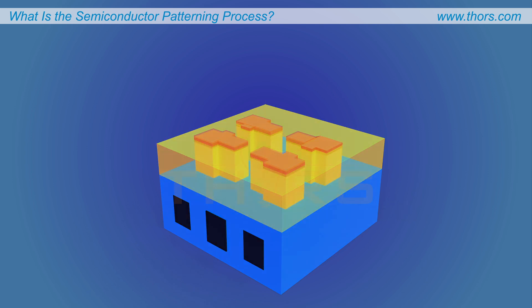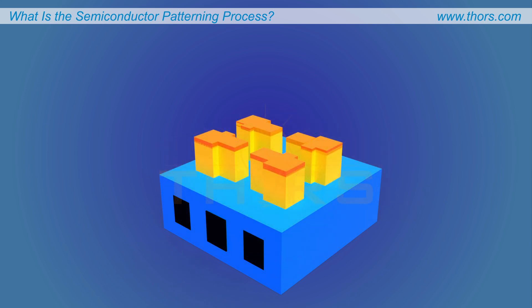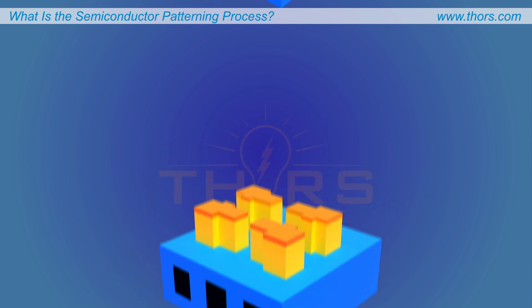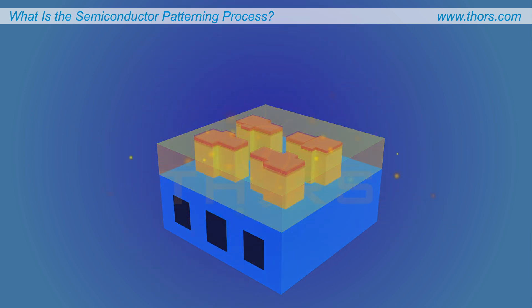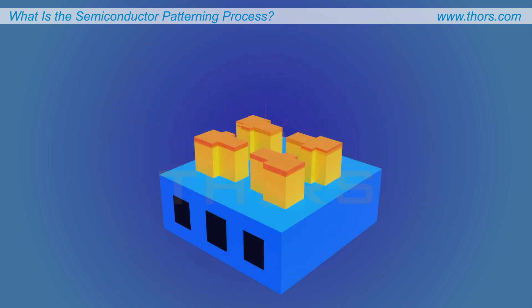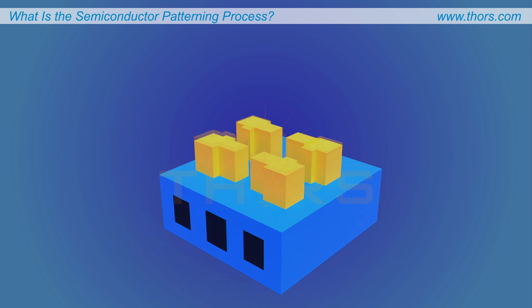Next, the uncovered substrate material is etched to create the desired pattern. In semiconductor manufacturing, etching refers to a controlled process of selectively removing material from the substrate. Subsequently, the remaining photoresist layer is also etched to create the final pattern on the substrate.